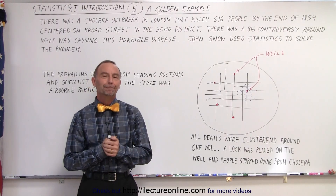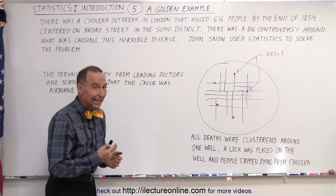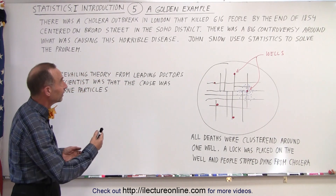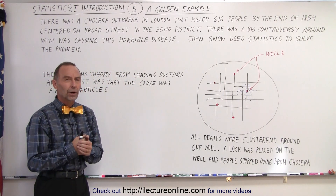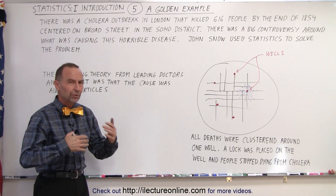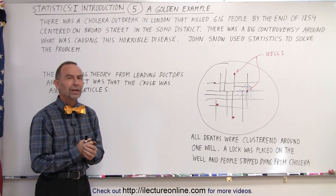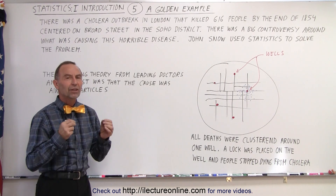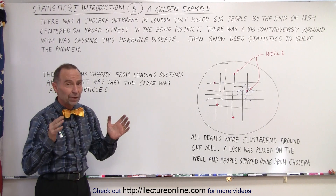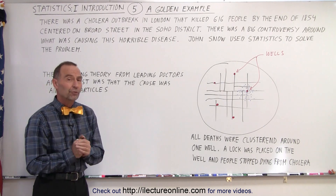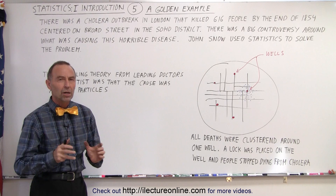Welcome to Electroline. It turns out that back in the 19th century in London, there was a big epidemic of cholera, and people were dying left and right. There were cholera outbreaks on a regular basis, and by 1854, over a period of a few years, over 600 people had died from cholera.